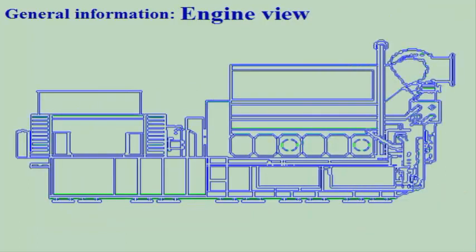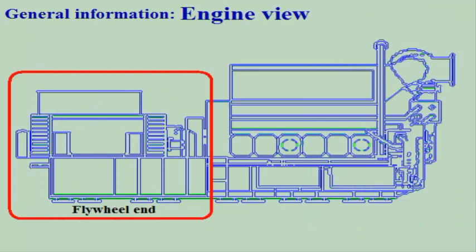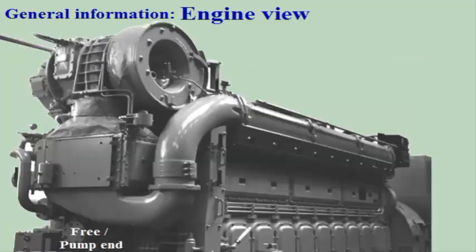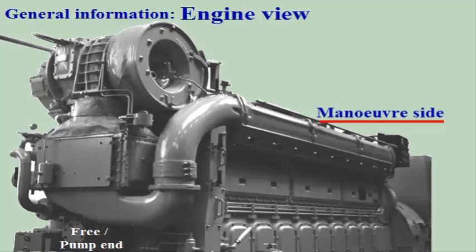The flywheel end of the engine is where the flywheel is fitted. The opposite end is called the free end or the pump end. The manoeuvre side of the engine is the longitudinal side where the control panel is fitted. This is the same side where the fuel oil injection pumps are located.